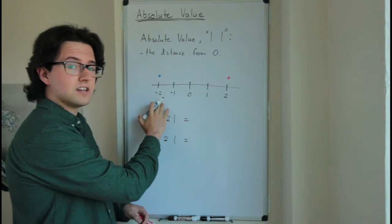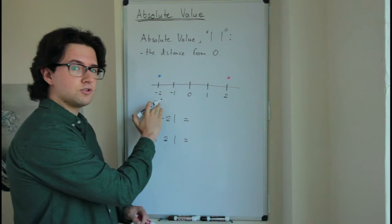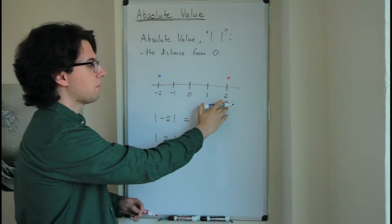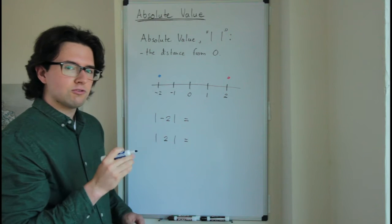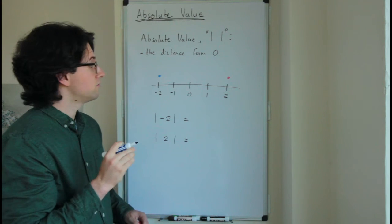So let's take a look at this number line. I've got negative two in blue and I've got positive two in red. Let's find how far each of these values are from zero.